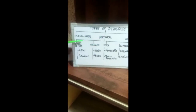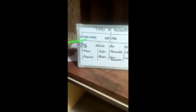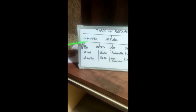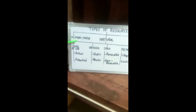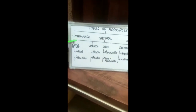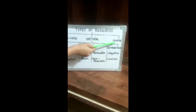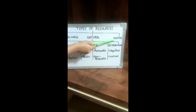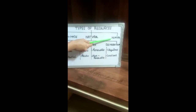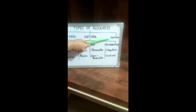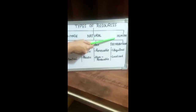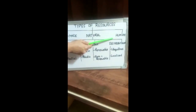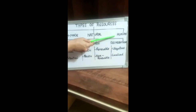Number 2, Human-Made Resources — the resources which are either created by humans or modified from their original form according to human needs are called Human-Made Resources. Number 3 is Human Resources. We, the humans, are the biggest resource of all. It is human beings who can turn anything into a useful resource using their knowledge, skill, and technology.